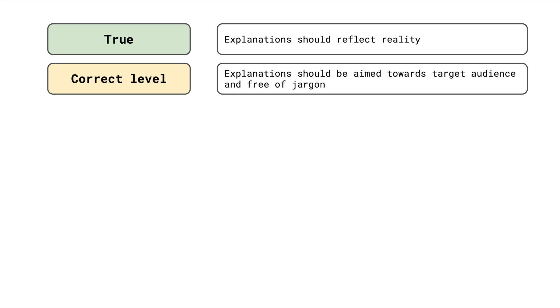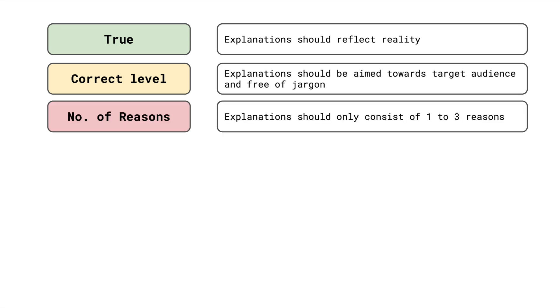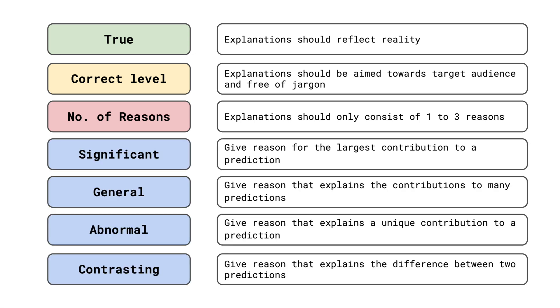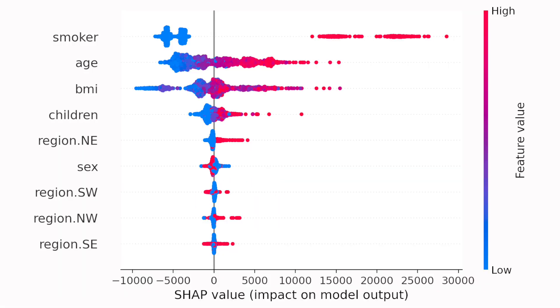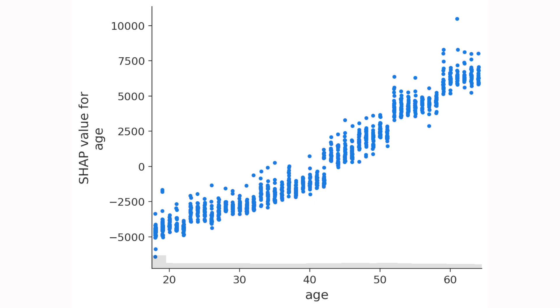These include whether the reasons are true, given at an appropriate level, and the number of reasons provided. When it comes to the individual reasons given, we must consider if they are significant, general, abnormal, or contrasting. Along the way we will use SHAP plots to ground the characteristics with an actual explainable AI method.